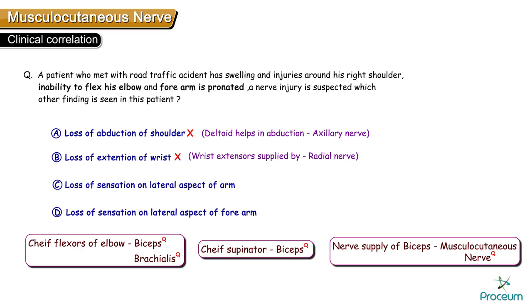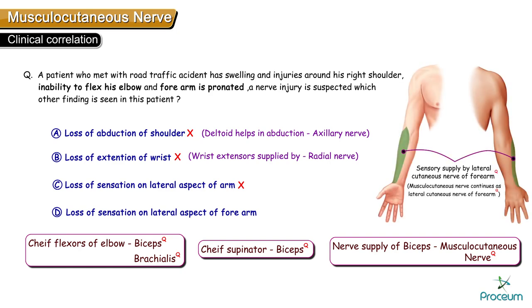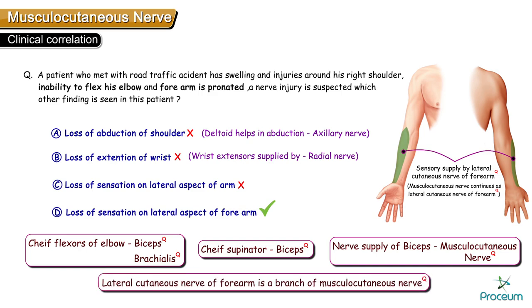Loss of sensation on the lateral aspect of the arm? No. The musculocutaneous nerve gives rise to the lateral cutaneous nerve of the forearm. So the correct answer is D — the patient will be expected to have loss of sensation on the lateral aspect of the forearm, as the lateral cutaneous nerve of the forearm is a branch of the musculocutaneous nerve.